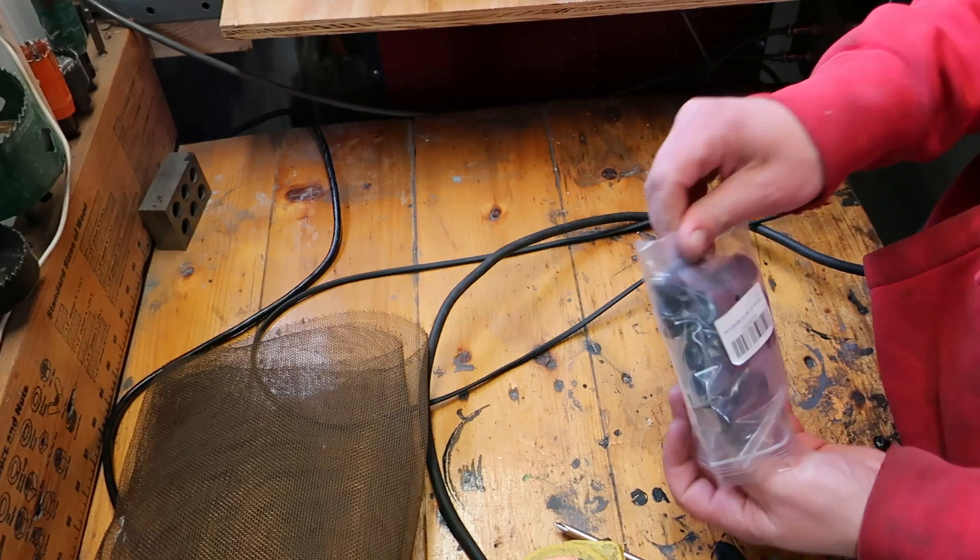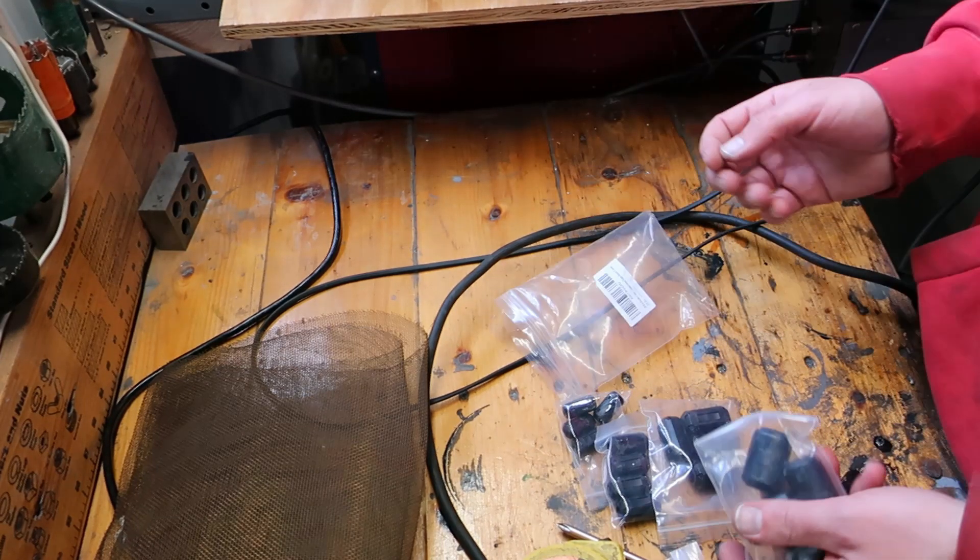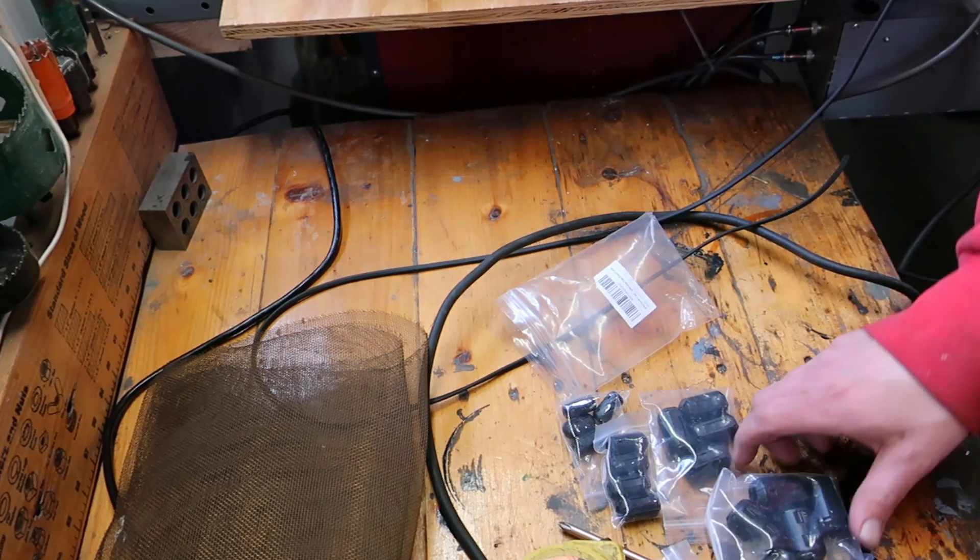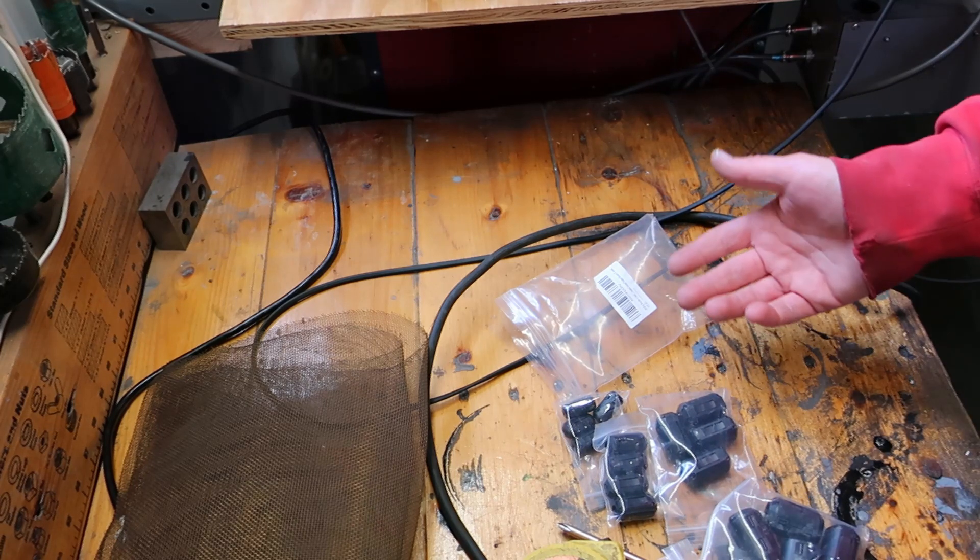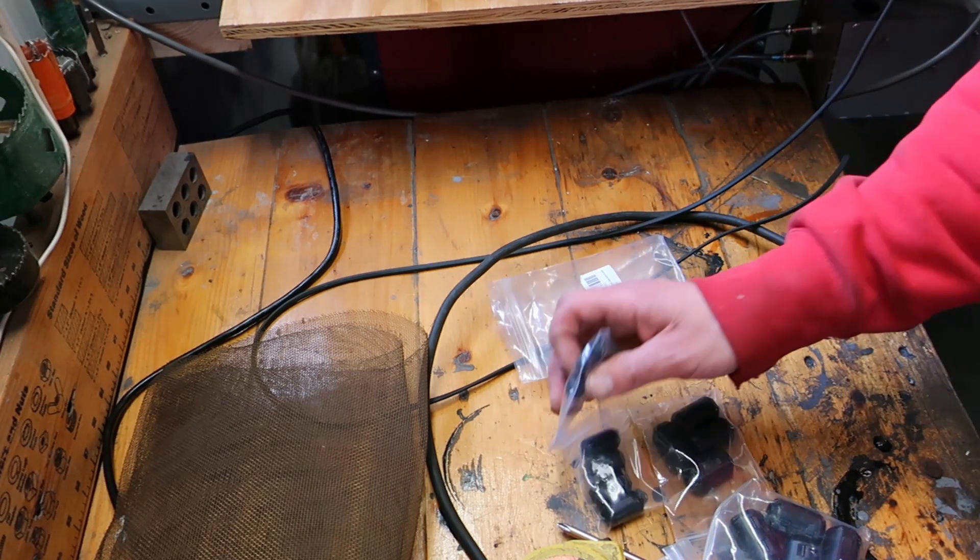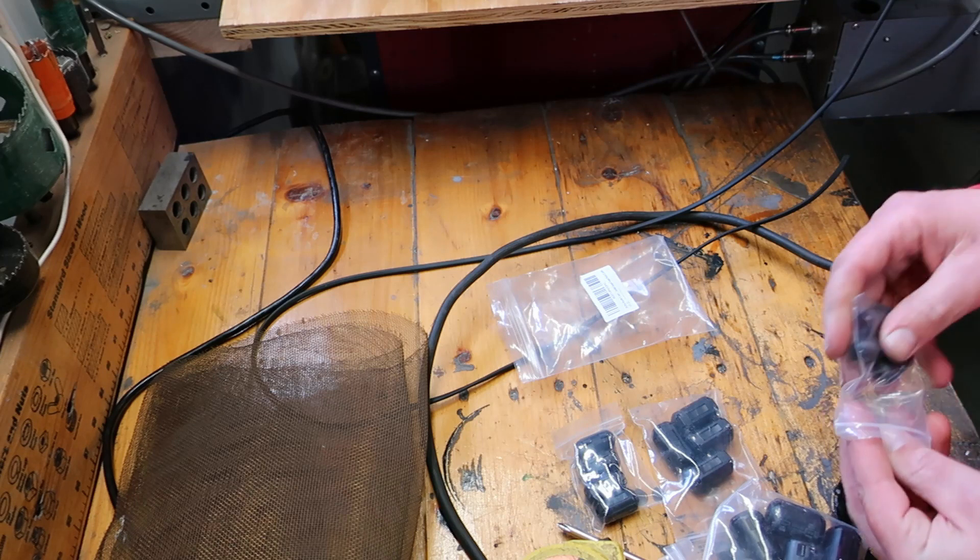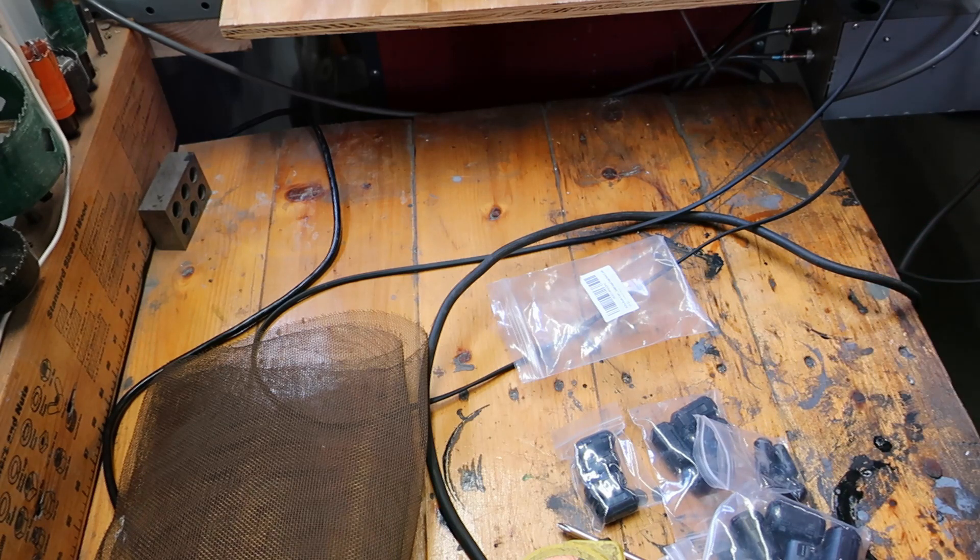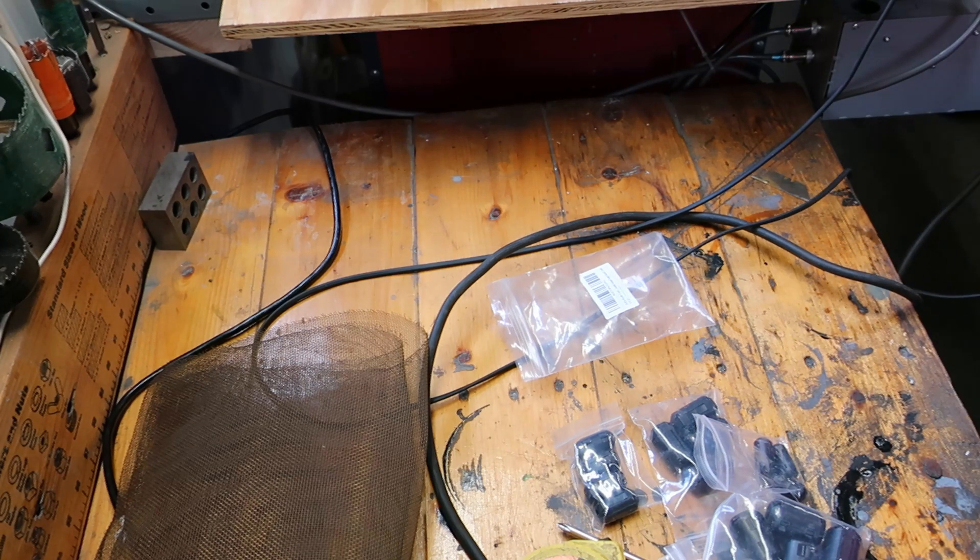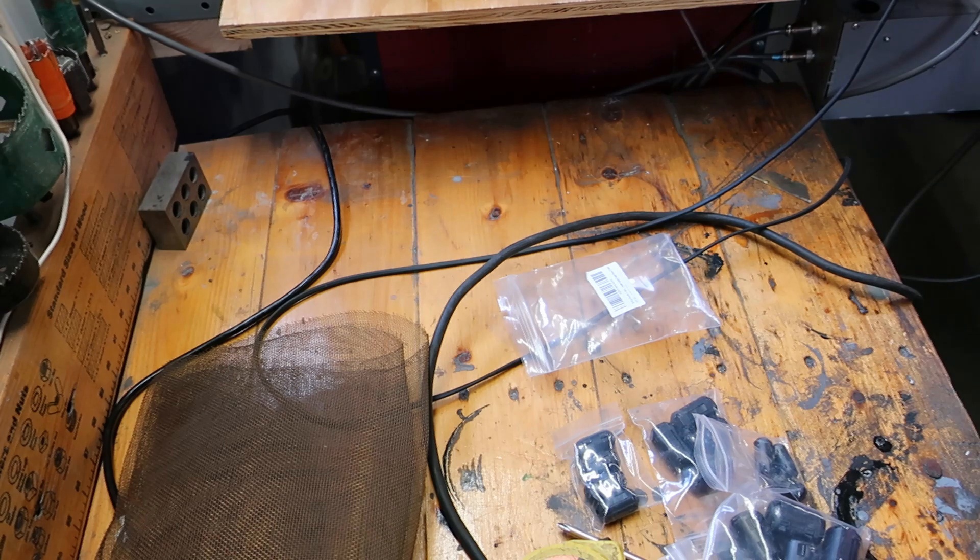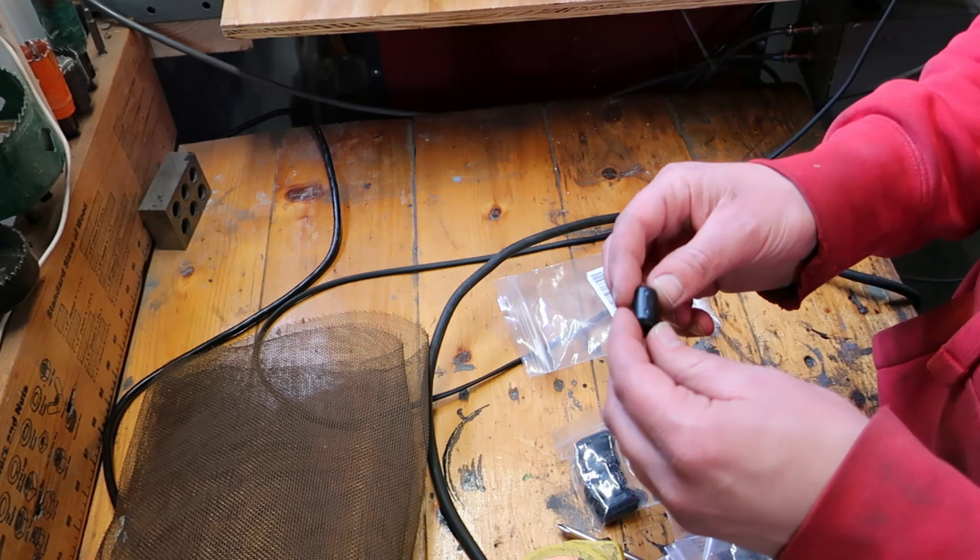I got these on Amazon, they're like 11 bucks for like four of each size. We can put them on the power cord, the stepper motor cords, plasma cutter on/off encore, we can put these things darn near on anything.